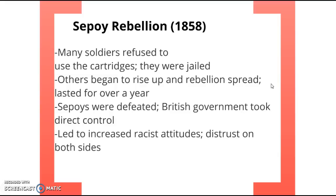Eventually the British won, and the sepoys were defeated. The effect was that the British government totally took over control. The Indians had a little bit of say in what went on before, but after this rebellion — just like with failed slave rebellions — the government totally took over. Additionally, the people sent over who witnessed the violence thought of the Indians as savages you couldn't trust, which increased the racism directed at them.